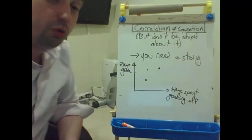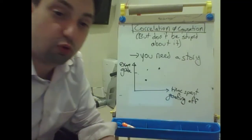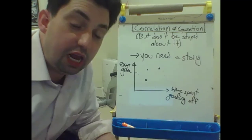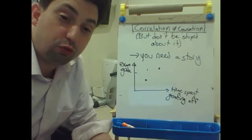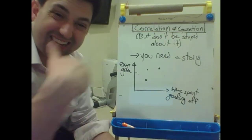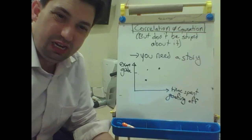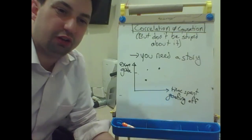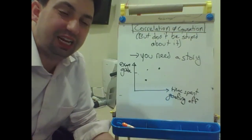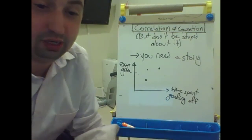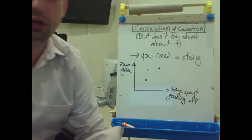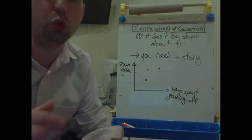That's going to conclude our conversation of correlation and correlation coefficients. Next, we're going to take the next step and start deriving something called a linear regression — and that's going to be really cool.